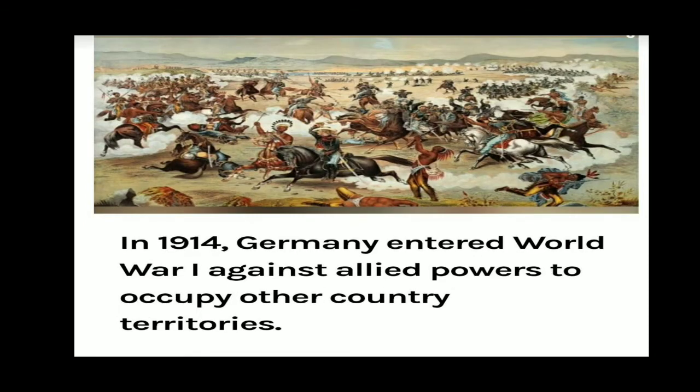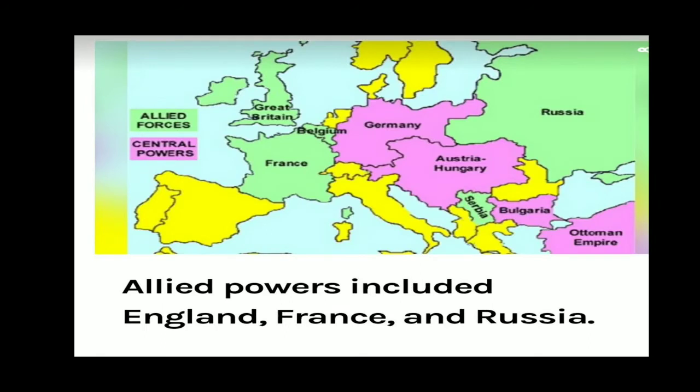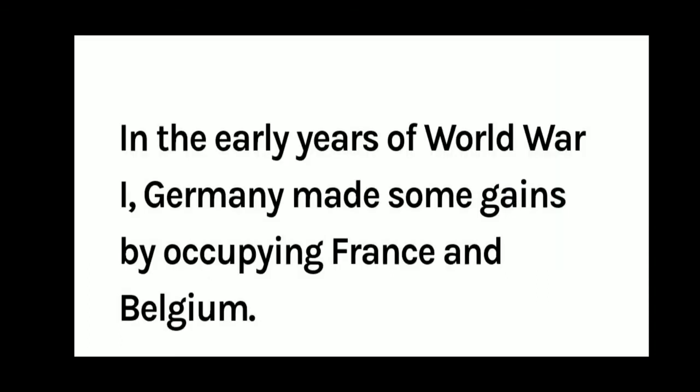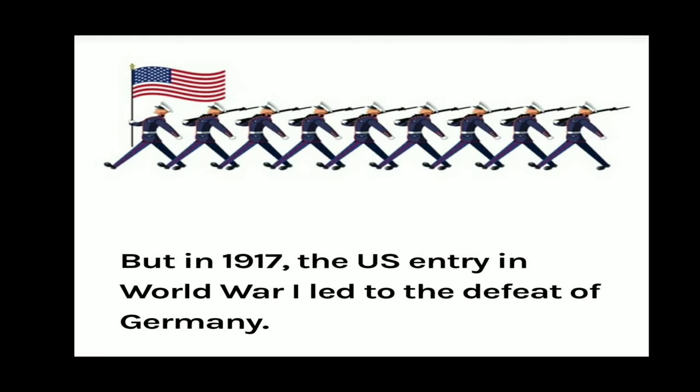In 1914, Germany entered World War I against Allied powers to occupy other countries' territories. Allied powers included England, France, and Russia, and later in 1917, America also joined them. Please go through the map to see the locations of England, France, and Russia. In the years of World War I, Germany made some gains by occupying France and Belgium. But in 1917, the U.S. entry into World War I led to the defeat of Germany.